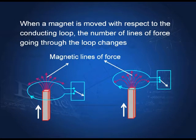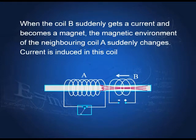When a magnet is moved with respect to the conducting loop, the number of lines of force going through the loop changes. When I move the bar magnet towards the coil, as it moves towards the coil the number of lines of force going through the coil changes. Similarly when I take it away, the number of lines of force changes. For two coils, when coil B suddenly gets a current and becomes a magnet, the magnetic environment of the neighboring coil A suddenly changes and a current is induced in the coil. Whenever there is a change in the magnetic environment of a conductor, an EMF is induced in it.